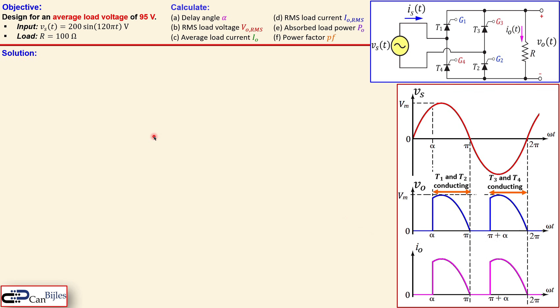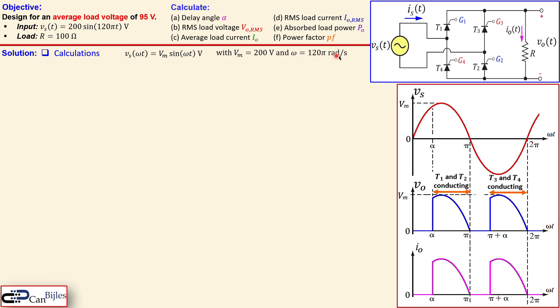Looking at the solutions for this example, let's first work in the omega-t domain, since the waveform is given in the time domain. The peak voltage Vm is 200 volts and omega is 120 pi radians per second.